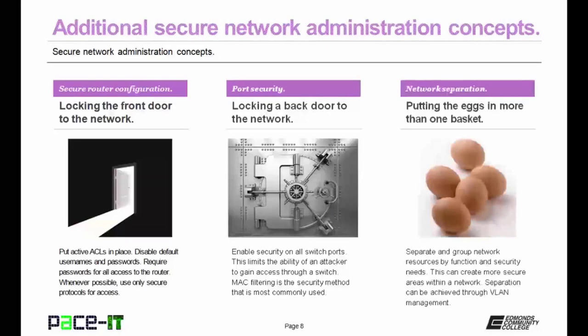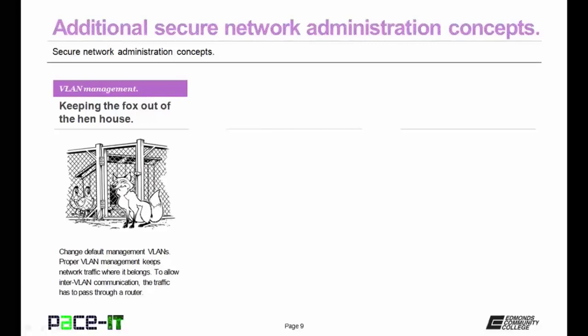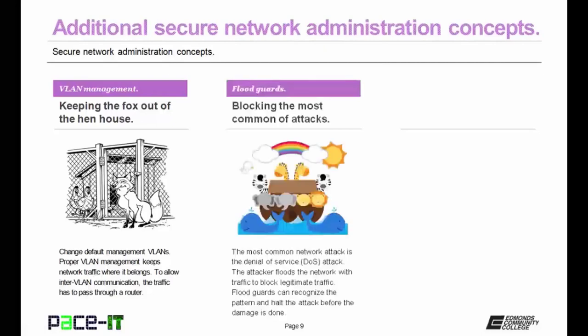Then there's network separation — putting your eggs in more than one basket. Separate and group network resources by function and security needs to create more secure areas within a network. Network separation can be achieved through VLAN and VLAN management. Proper VLAN management keeps network traffic where it belongs — change the default management VLAN configuration, because whenever there's a default in place, you need to change it. To allow inter-VLAN communication, the traffic has to pass through a router. Then there are flood guards — blocking the most common of attacks. The most common network attack is still the denial of service, or DoS, attack.